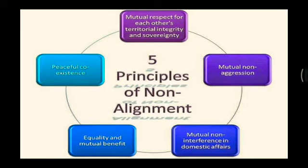There are five basic principles of non-alignment. The first is mutual respect for each other's territorial integrity and sovereignty — they will not interfere in each other's territorial disputes or sovereignty. The second is mutual non-aggression — everything must be decided without aggression, by settling disputes through discussions and meetings.